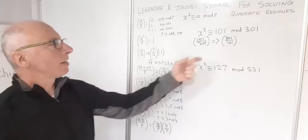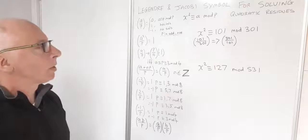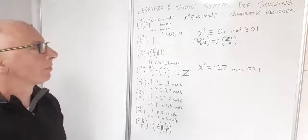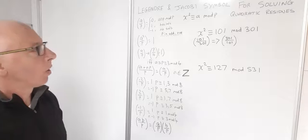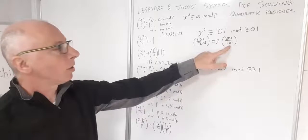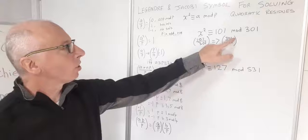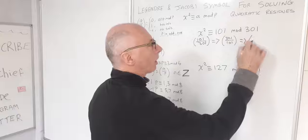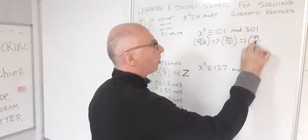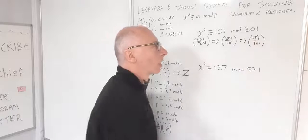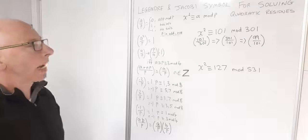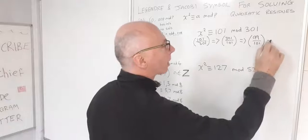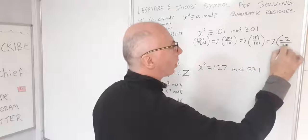Since these are periodic, I can deduct multiples of 101 from 301. Taking 301 and deducting 202 from the top leaves me with 99, giving (99/101). Now, 99 is the same as −2 in periodic notation, so I have (−2/101).